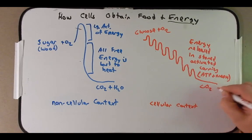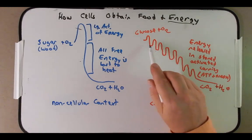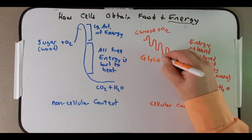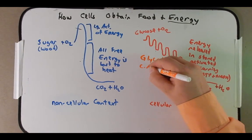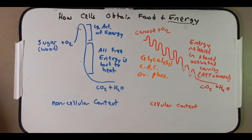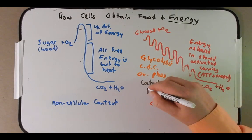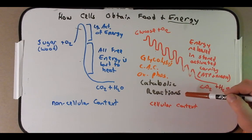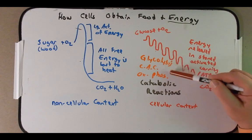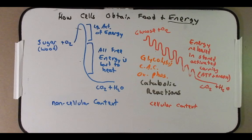All of these reactions — glycolysis, the citric acid cycle, and oxidative phosphorylation — are all examples of catabolic reactions. To remind you, catabolic reactions are those reactions that break down a larger molecule into a smaller molecule. Also to remind you, the reverse — the anabolic reactions — would be building up these larger molecules from smaller ones. And when we talk about photosynthesis, that's when we'll come back and talk about anabolic reactions.